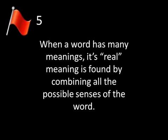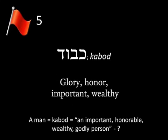Our fifth red flag: when a word has many meanings, its real meaning is found by combining all the possible senses of the word. Take, for instance, the Hebrew word kavod. In Hebrew, this means glory — as in the glory of God, the glory in the tabernacle or the temple. It can also refer to honor, or something important, or great wealth. So, are we to conclude that if the word kavod is used of a man, that man is an important, honorable, wealthy, godly person? No. There's no reason to combine all the possible meanings of a word into one unit and call that the meaning. Meaning is determined by context. The reason a word can be understood in different ways is because words are used in different contexts.